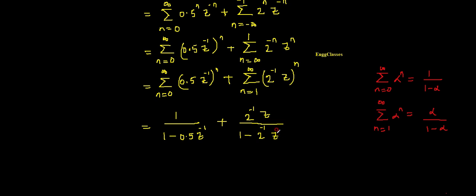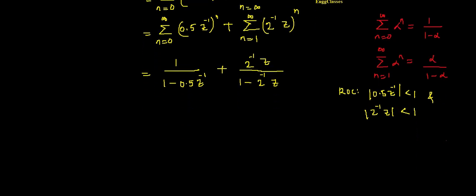Now let me write the ROC. With respect to the first term, the ROC is that the magnitude of 0.5 times z to the power minus 1 must be less than one. With respect to the second term, the ROC is that the magnitude of 2 to the power minus 1 times z must also be less than one. Simplifying the expressions: from the first term I get z divided by (z minus 0.5), and from the second term I keep 2 to the power minus 1 times z divided by (1 minus 2 to the power minus 1 times z).